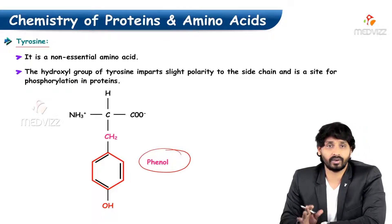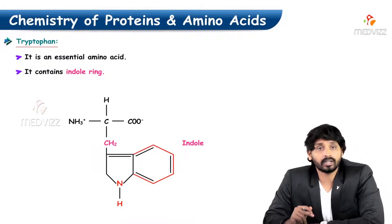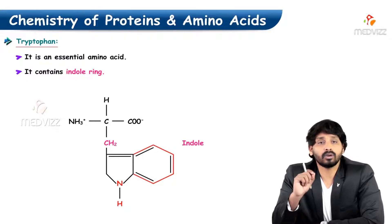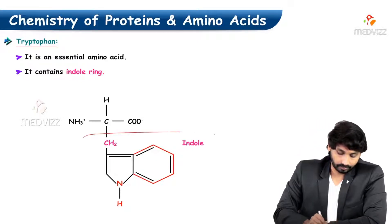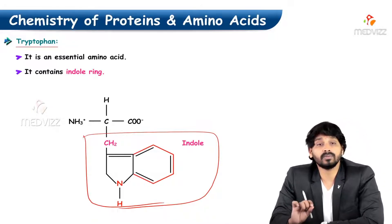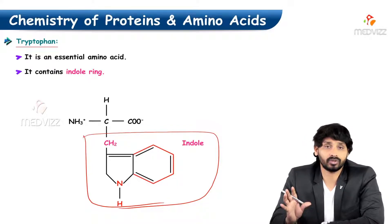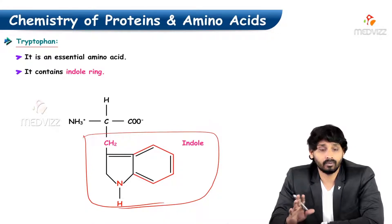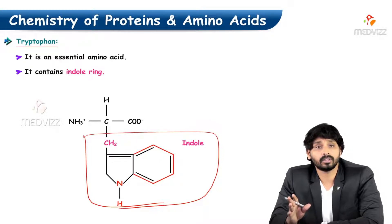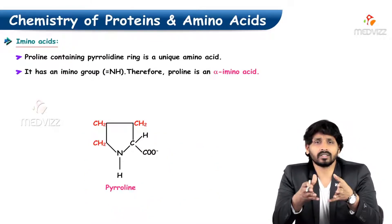Phenylalanine carries only a benzene ring, whereas tryptophan is an essential amino acid with an indole ring as its functional group. Tryptophan is very important in the synthesis of coenzymes like NADP and NADH, and also for vitamins like B3 (niacin). Tryptophan is required for the synthesis of these vitamins and coenzymes.